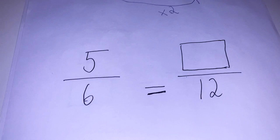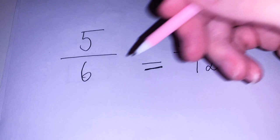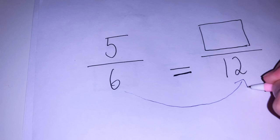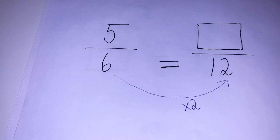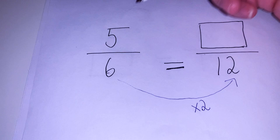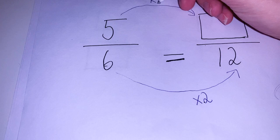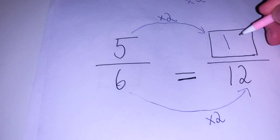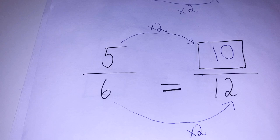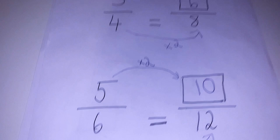I've got six here as my denominator and twelve here as my denominator. So we're going to multiply six by two, which gives me twelve. And remember, whatever I do to the bottom, I do to the top as well. So I'm going to multiply five by two, which will give me my missing numerator. Five multiplied by two gives me ten. So five sixths are equal to ten twelfths — they are equivalent fractions.